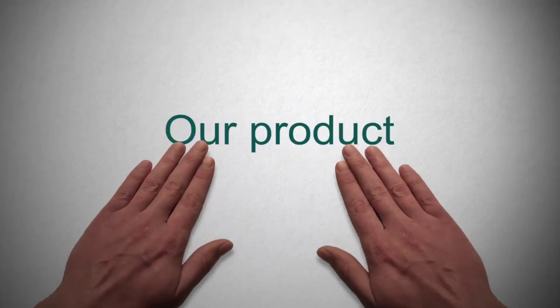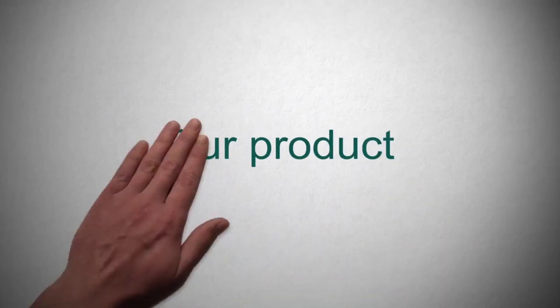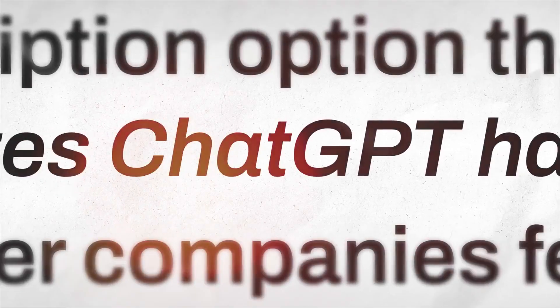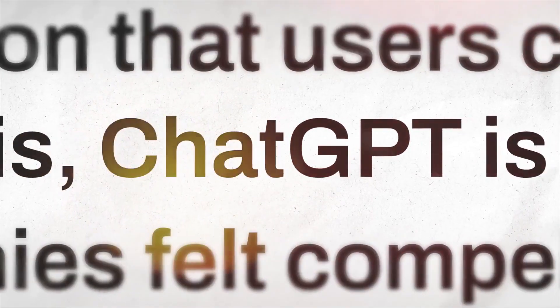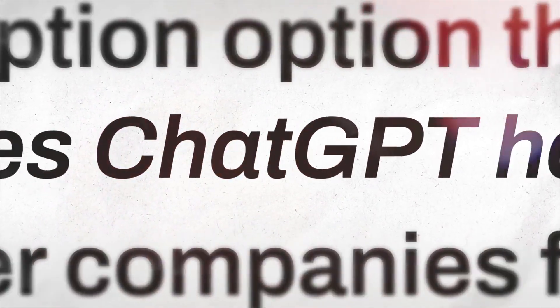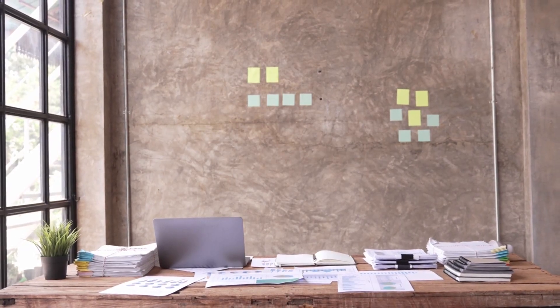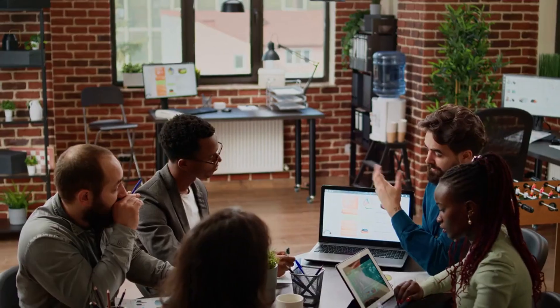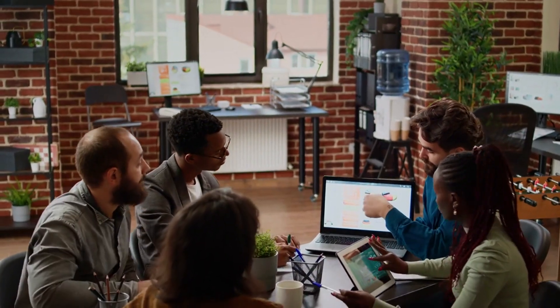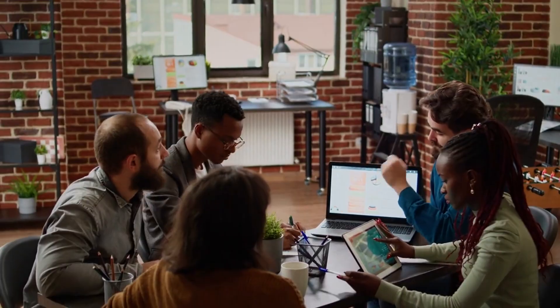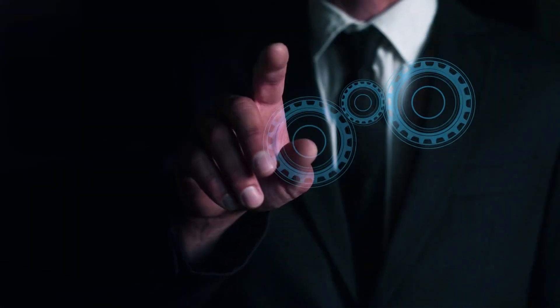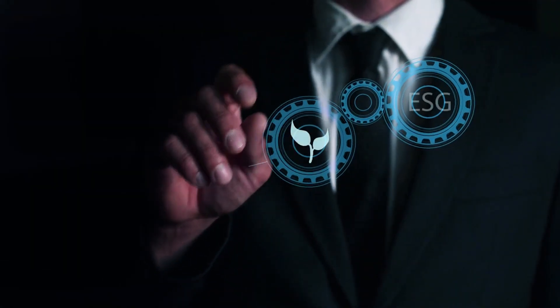Let's talk rollout. ChatGPT Agent is going live today for Pro, Plus, and Team users. Pro users will get 400 queries a month, and some Team users will get 40 queries a month. Rollout for Enterprise and EDU will follow by the end of the month.